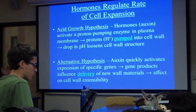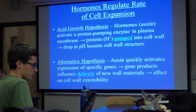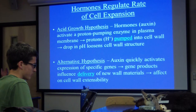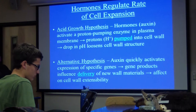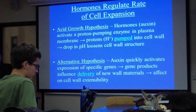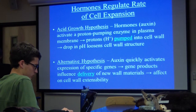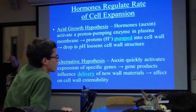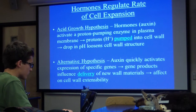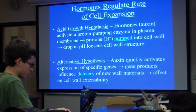Either way, I have a hunch that they're both true — it just depends on the hormone and the plant. They're probably both happening, but the bottom line is that in both cases, hormones are influencing cell wall extensibility, which influences the ability of that plant to grow and the ability of cells to elongate.